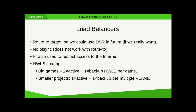For load balancers, we use the route 2 target, which basically rewrites the MAC address and sends public traffic through your internal network. You need the public IP on the machine itself on the loopback interface. This allows direct server return in the future. NAT would be the other way, but NAT is evil, especially for IPv6. pfsync doesn't work with route 2, so we cannot use it.